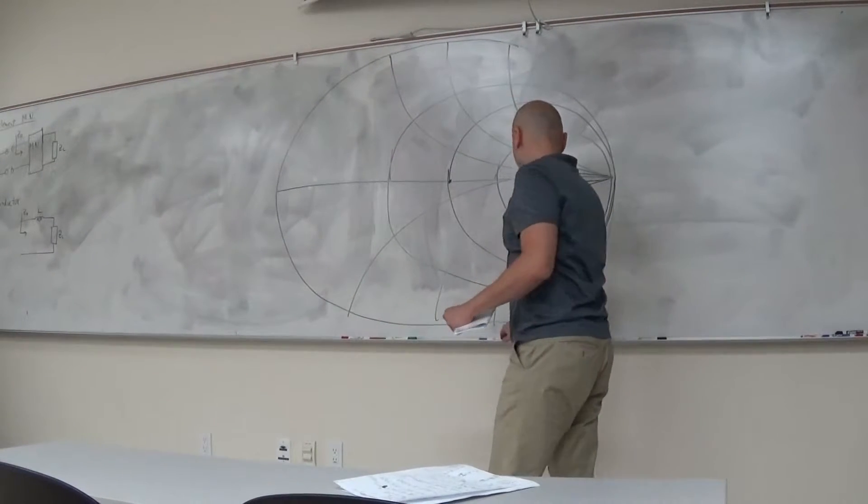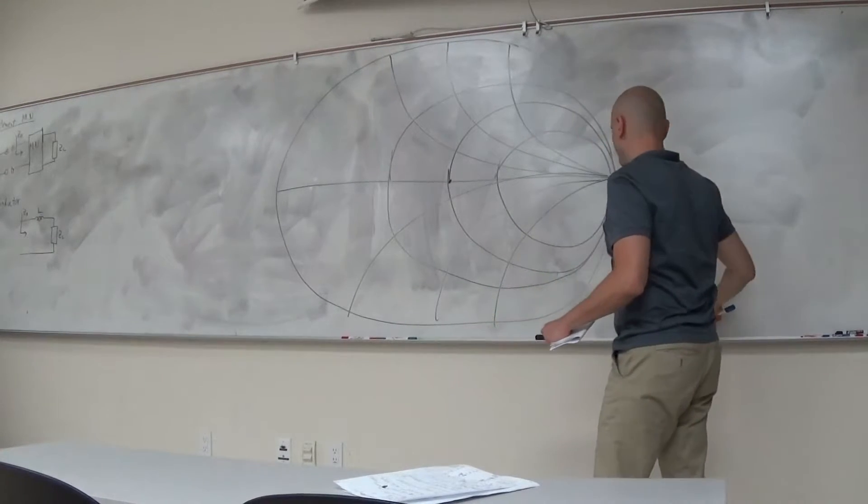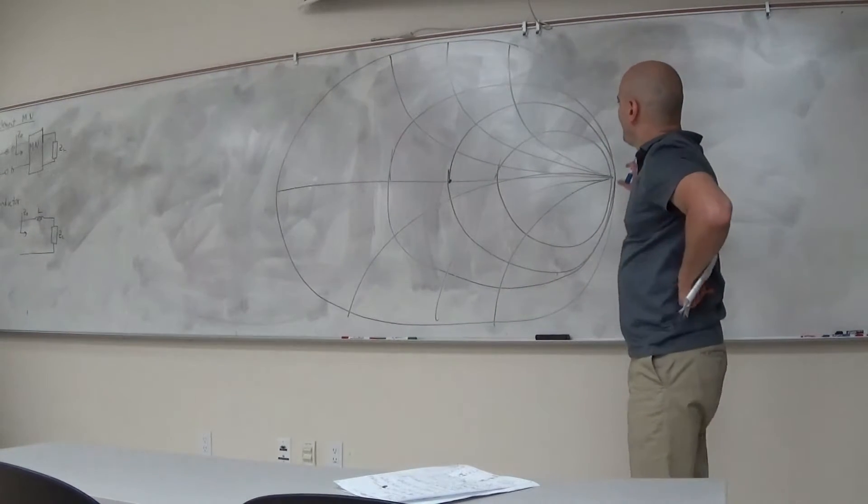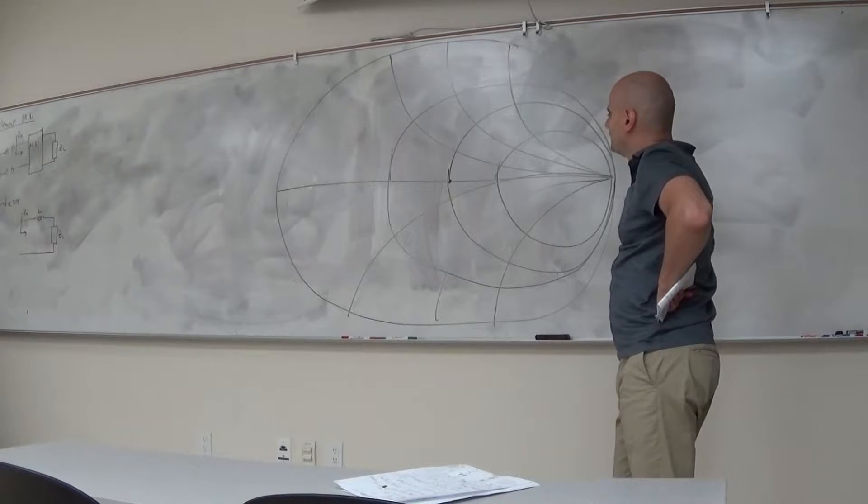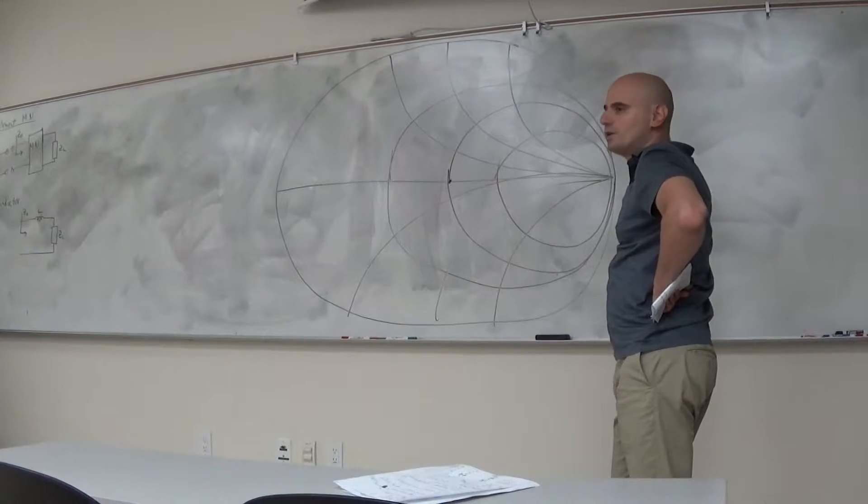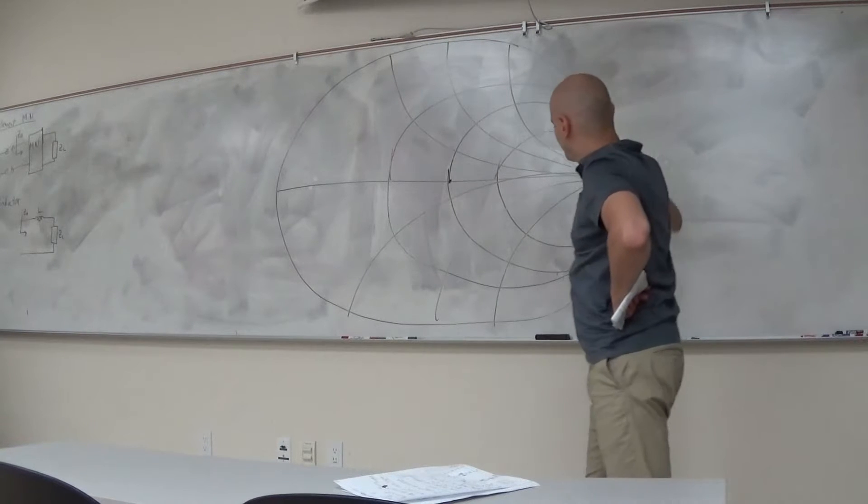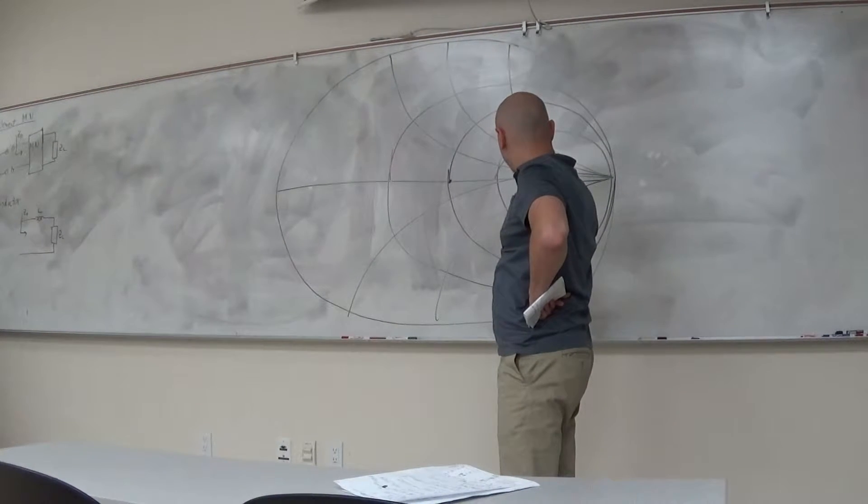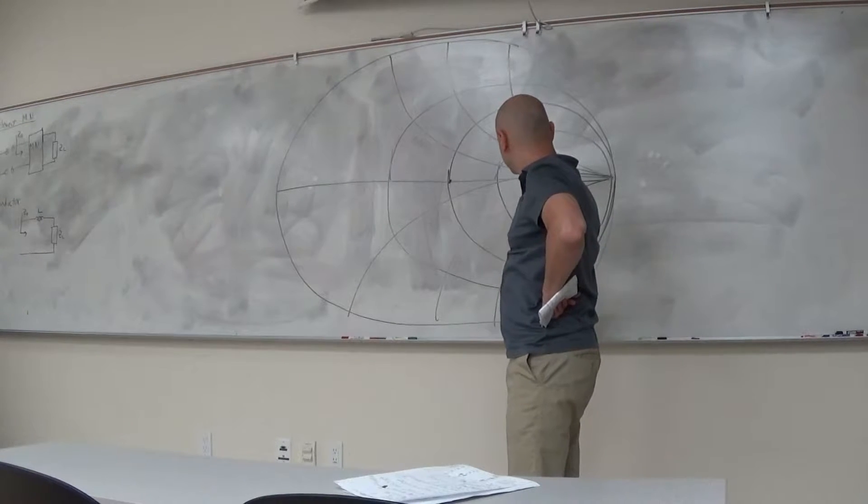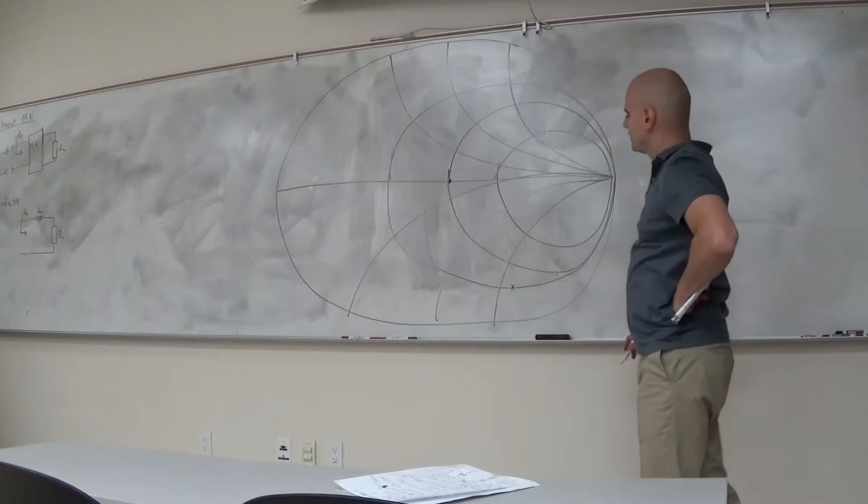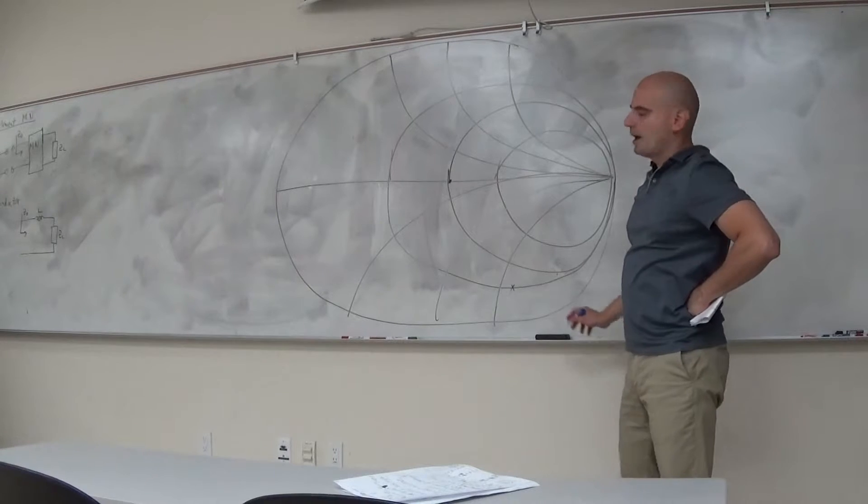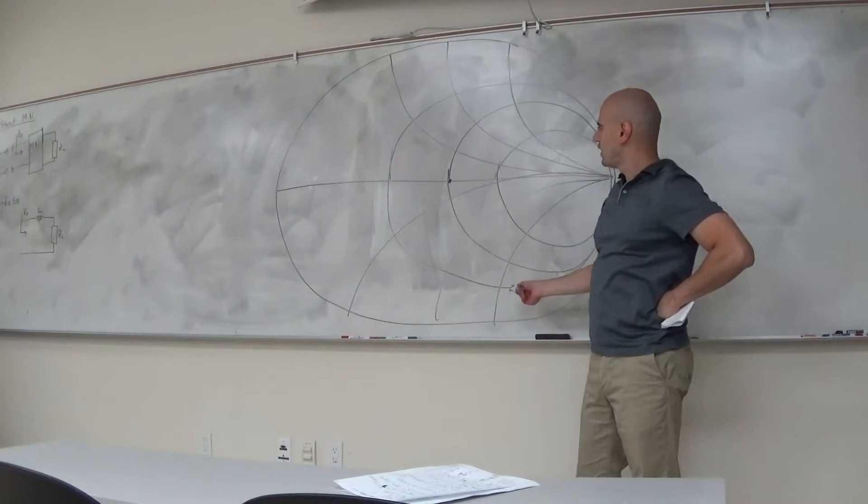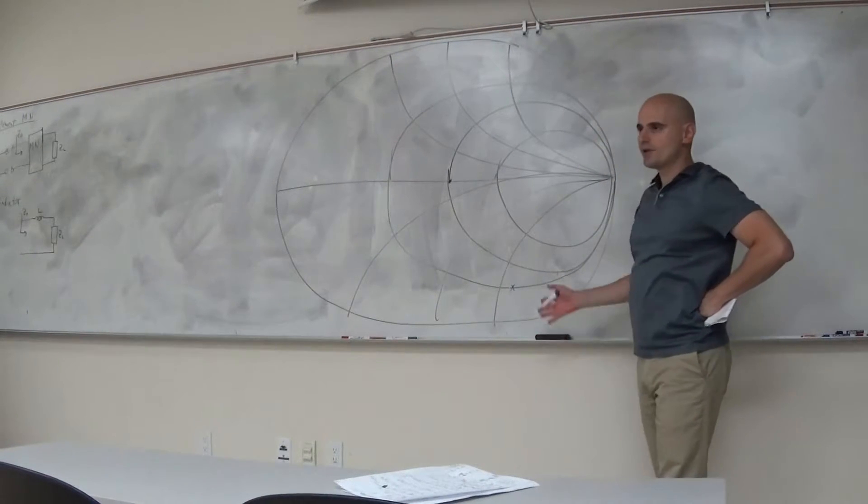Now, if I have some impedance ZL somewhere on the Smith chart and I add an inductance to it, then what does that do to my impedance? Let's say that my impedance is here. That's ZL. And then I put an inductor in series with ZL. So how does that move my impedance?